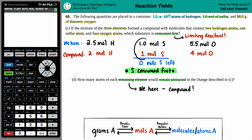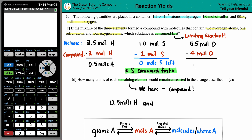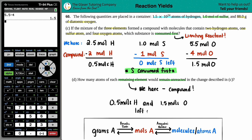Just like we did one minus one to get zero moles of sulfur left, we're going to do 2.5 moles minus 2, giving us 0.5 moles of hydrogen left over. And for the oxygen: 5.5 minus 4 — that's 1.5 moles of oxygen left over. So those are the amounts that are not reacted.